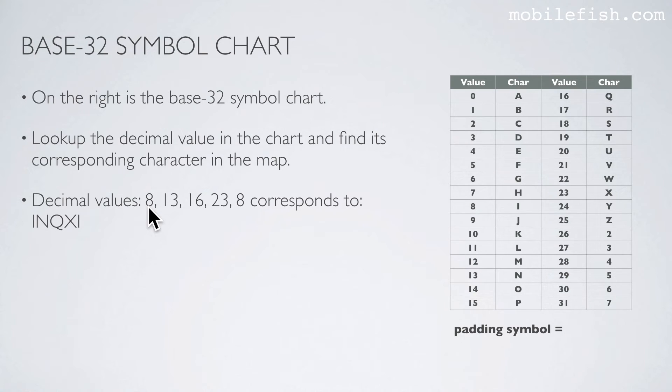The decimal value 8 is mapped to character i, decimal value 13 maps to character n, decimal value 16 maps to its corresponding character, and the process continues for all values in the mapping.